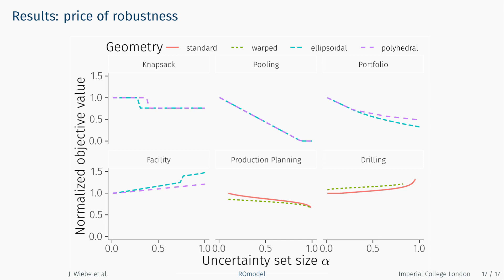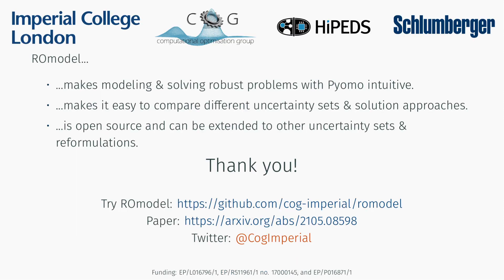A major benefit of Roamodel is that trying out different uncertainty set geometries and solution approaches becomes very easy. Roamodel is a useful tool that makes modeling and solving robust optimization problems much easier than it often currently is in practice. It is open source and extensible, and new library uncertainty sets and reformulations can be added. If you are interested, check out the GitHub for installation and usage instructions, the paper available on Archive, and follow the group's Twitter account for updates on ongoing research.